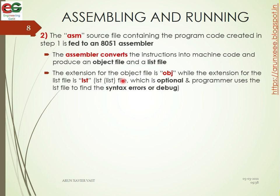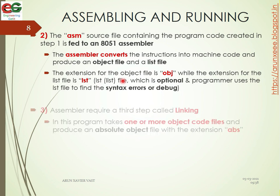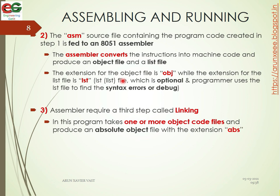Step 3 is the linking process. Assemblers require a linking step in which one or more object files are combined together to produce an absolute object file with the extension .abs. All .obj files are combined to make a single absolute object file.